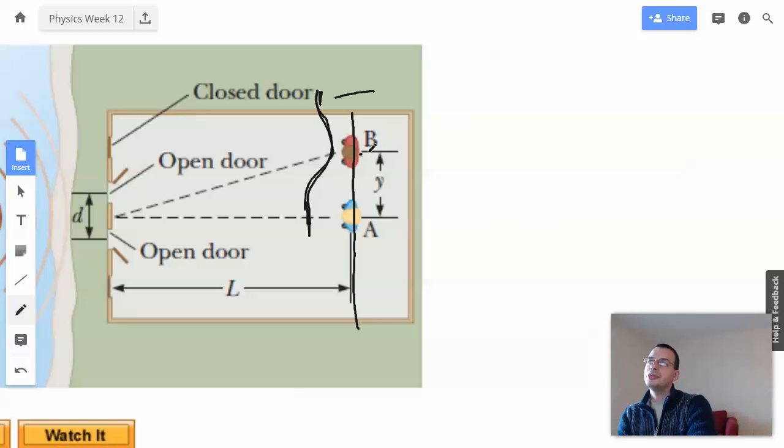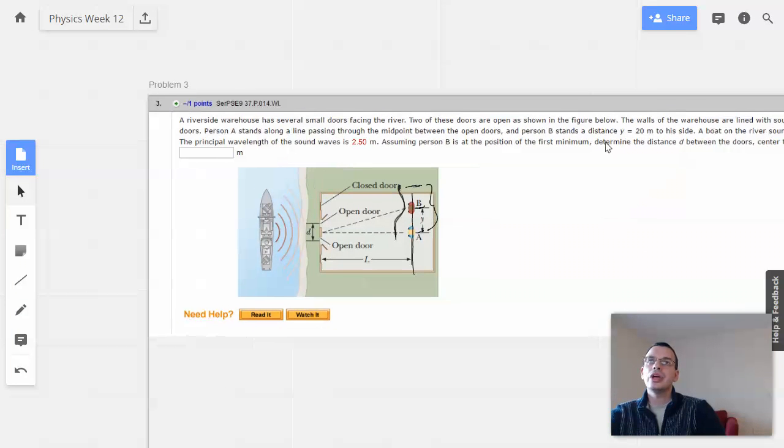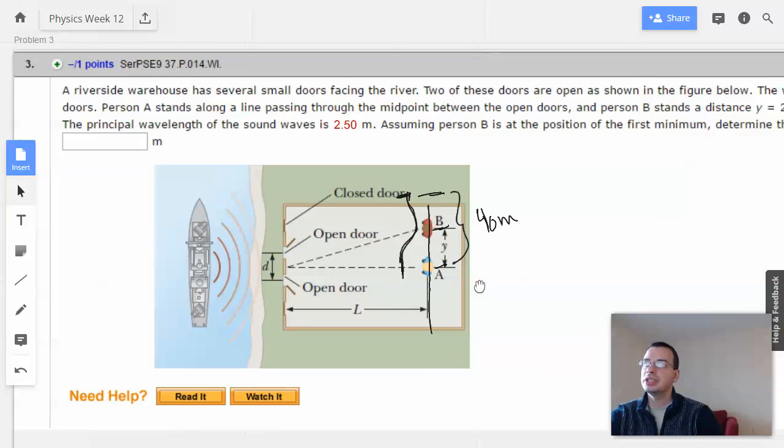That also means that the second person is halfway to the maximum. Person B stands 20 meters to his side. So the second maximum, the not middle maximum, is going to be 40 meters away, i.e., twice the distance that B is.